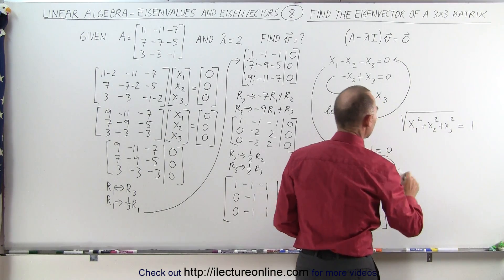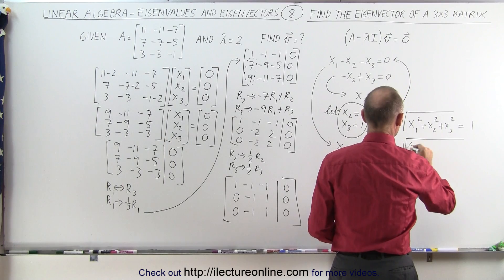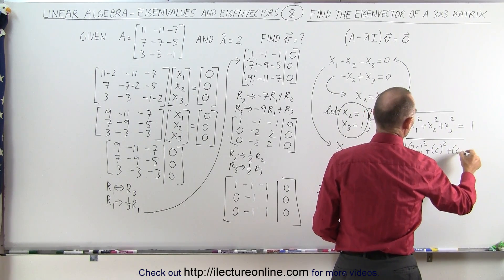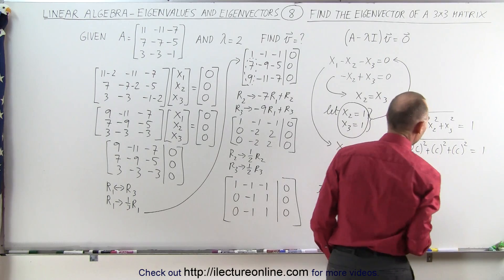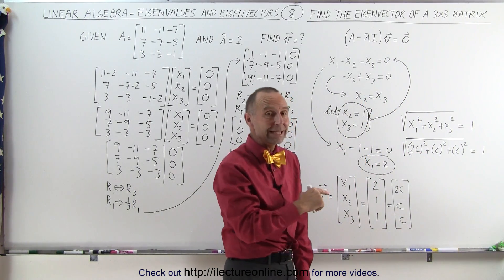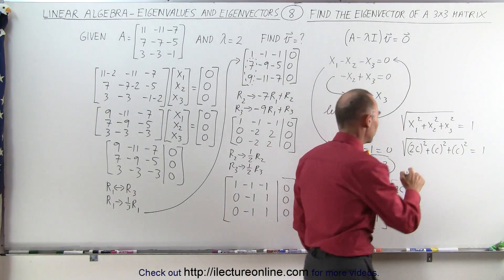And I'll plug those values in here and see what we get. The square root of 2c squared plus c squared plus c squared should equal to 1. And that will allow me to find the value for c that will give me the, what we call, eigenvector in normalized format. So,